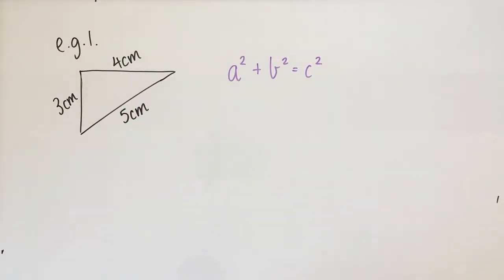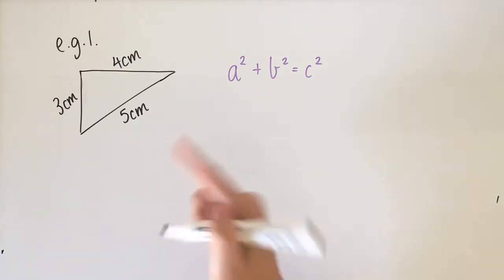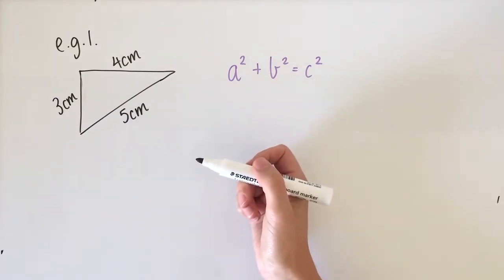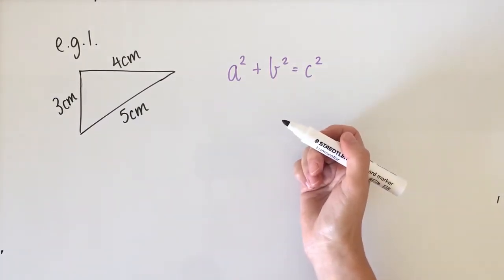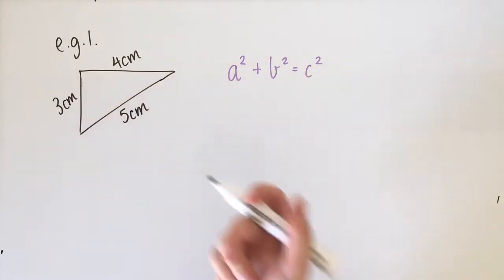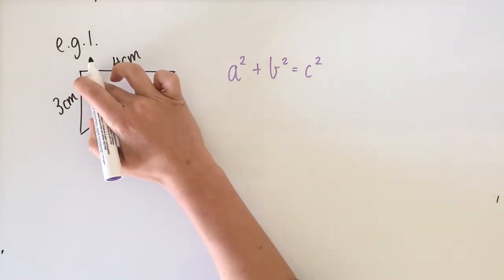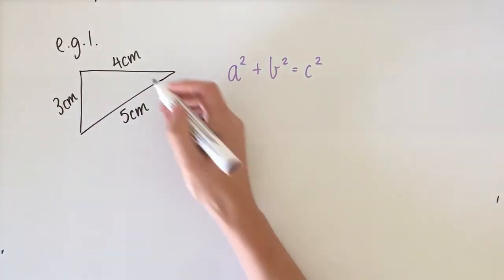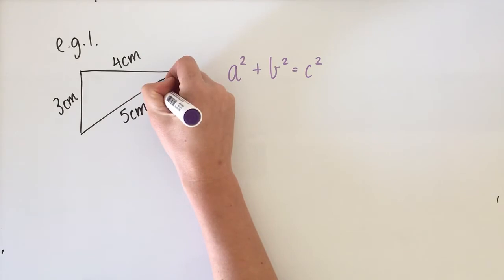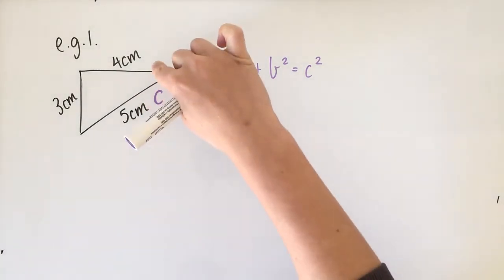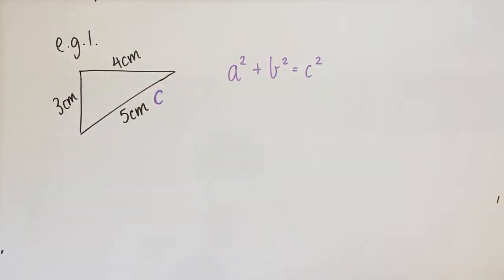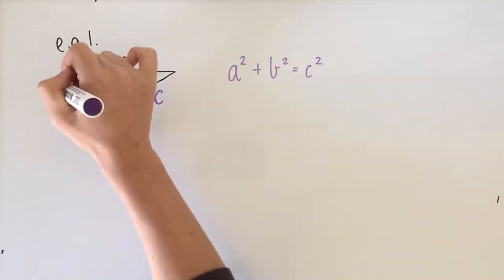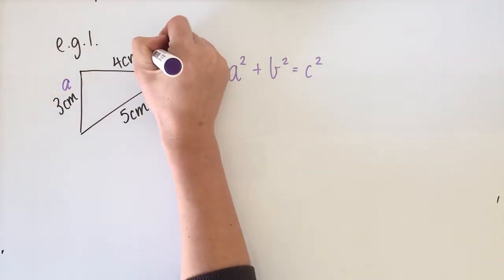We label the sides: the hypotenuse is opposite the right angle and is the longest side, so that is c. Out of these sides, the longest is 5, so I'm going to label that c. The other two sides — a and b — are the short sides. It doesn't matter which is which, but I'm going to make 3 side a and 4 side b.